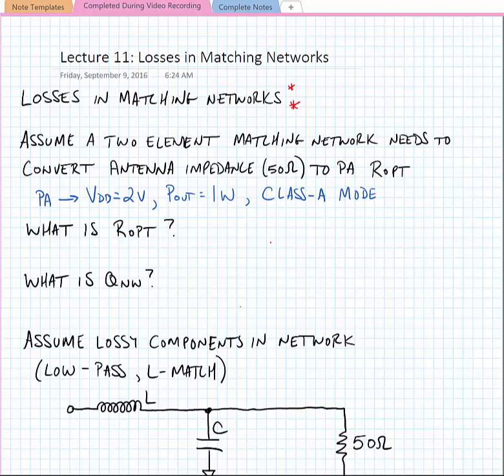Okay, in this lecture we're going to start talking about losses in matching networks. Losses in matching networks arise due to resistances that exist due to various parasitic effects in passive components such as inductors and capacitors.